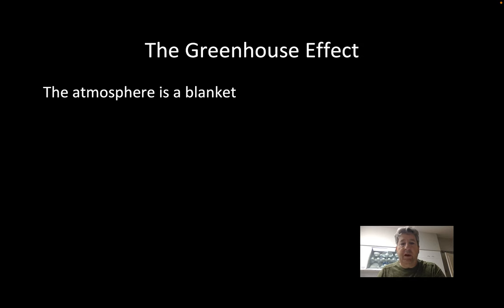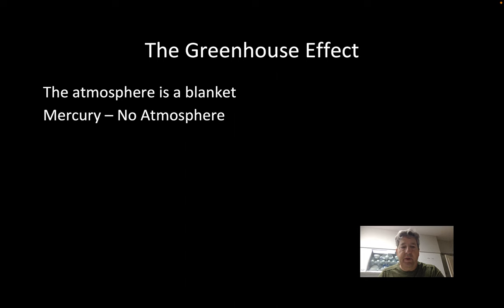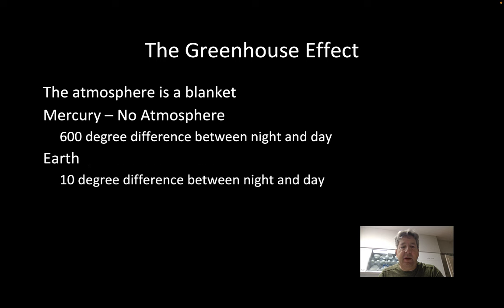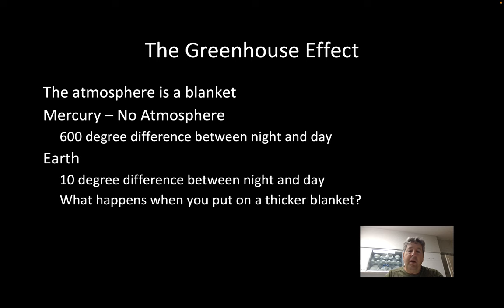The greenhouse effect is essentially that our atmosphere is a blanket. Mercury, with no atmosphere, has a 600-degree difference between night and day, while the Earth has only a 10-degree difference. So the question is: what happens when you put on a thicker blanket? What happens as you add greenhouse gases to the layer of the atmosphere that reflects infrared heat back to the Earth's surface?